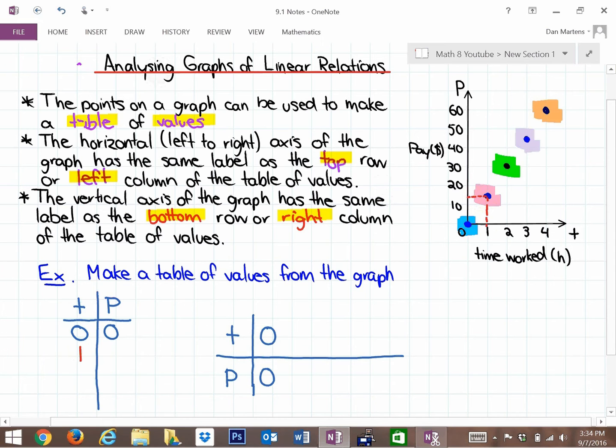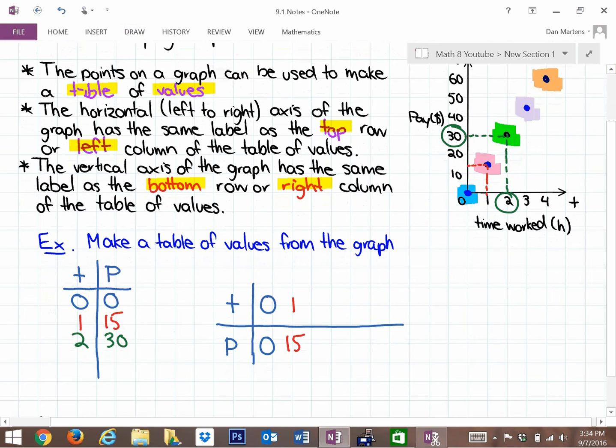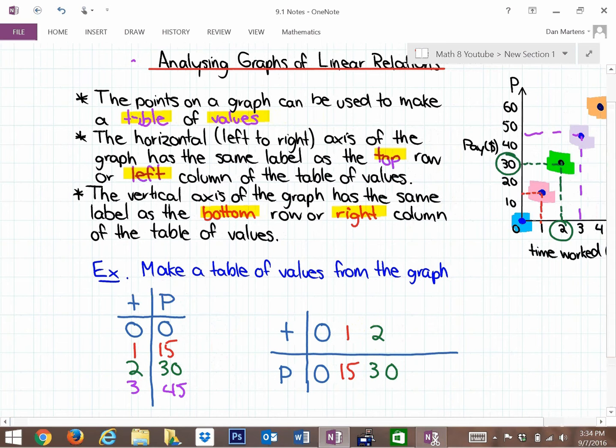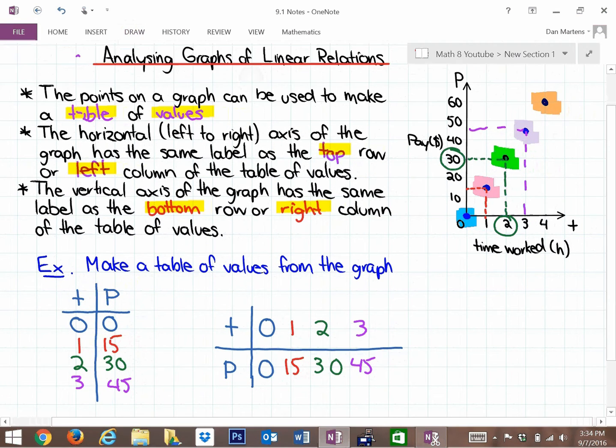That's the relationship for all these points. You might want to try relating the rest of the points if you pause this on your own. But that third point lines up with the 2 for T and 30 for P. The fourth point, the purple point, lines up with 3 and 45. And the final point, that orange point, lines up with 4 on the horizontal axis, on the T axis, and 60 on the vertical axis, or the pay axis.